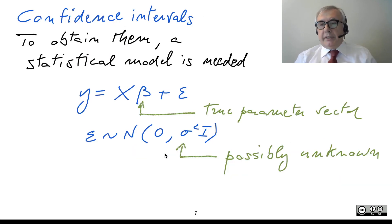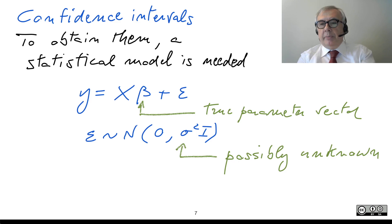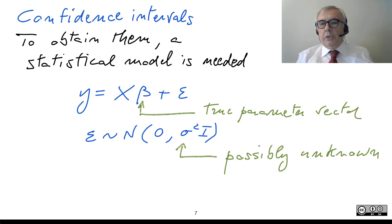The next step is working out confidence intervals for the parameters. So far, we have obtained what is called a point estimate, which is important, but can be unsatisfactory because we know the data are noisy and the value of beta we obtain would be different if tomorrow we collect a new training set.